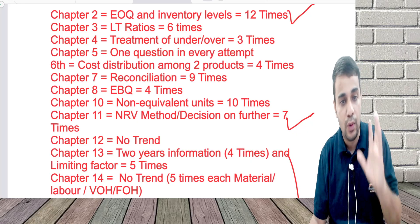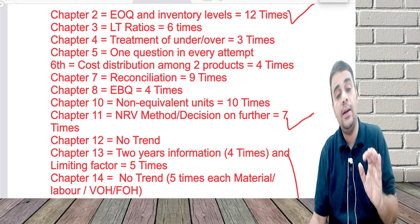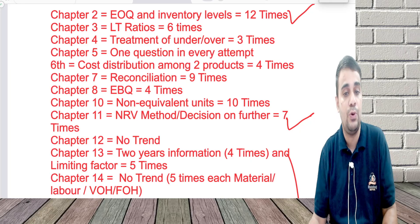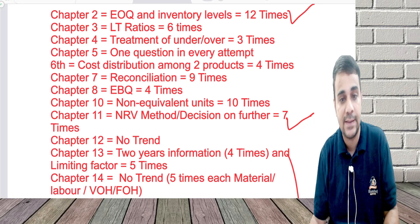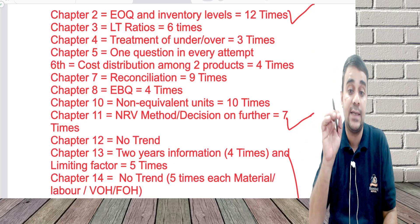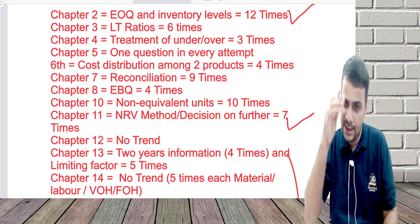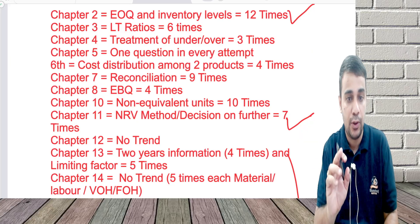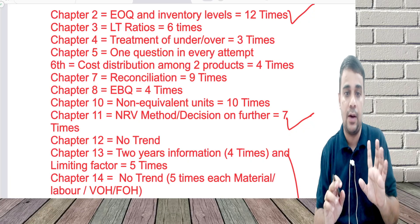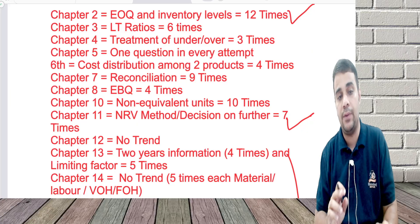In Chapter 3, I observed a trend: labor turnover ratios — the flux method, separation method, and replacement method — have been tested six times in the exam. If you're not able to do other areas, leave them but at least cover this area. Chapter 2: EOQ and inventory levels. Chapter 3: labor turnover ratios. Cover these.